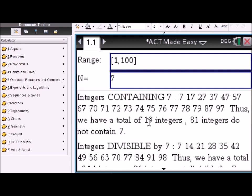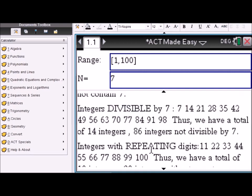There are 19 integers between 1 and 100 that contain a 7. That also means 81 integers don't contain a 7. How many numbers are divisible by 7 between 1 and 100? That would be 14. So 86 integers are not divisible by 7.